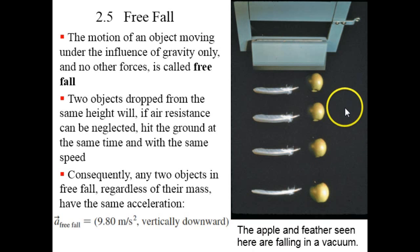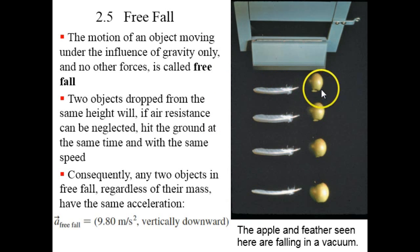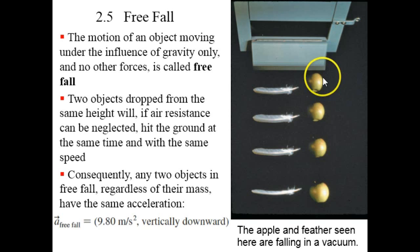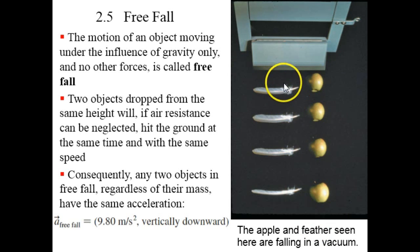For example, in a vacuum chamber where all the air has been pumped out, so there's no air resistance, a feather, which is very light, and an apple, which is a lot heavier, will fall together — will fall with the exact same acceleration. It's only air resistance which causes the feather to fall slower in a normal circumstance.